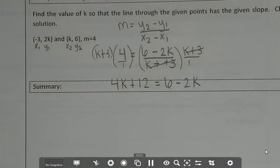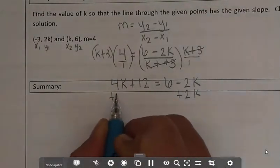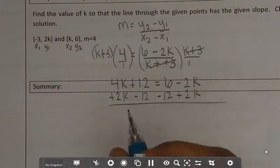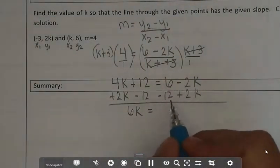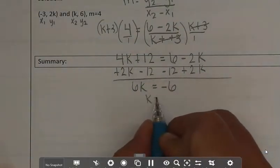I'm going to get all my k's on one side, everything else on the other side. So I'll add 2k to both sides and subtract 12 from both sides, all in one nice step. So I get 6k equals negative 6. So k ends up being negative 1.